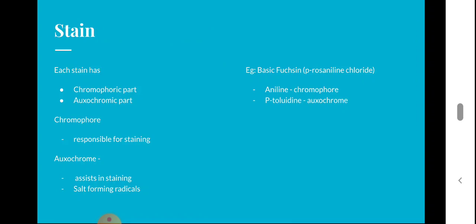Each stain has a chromophoric part and an oxochromic part. The chromophore is responsible for staining, while the oxochrome assists in staining and consists of salt-forming radicals. For example, basic fuchsin (p-rosaniline chloride) — here aniline is the chromophore and p-toluidine is the oxochrome.